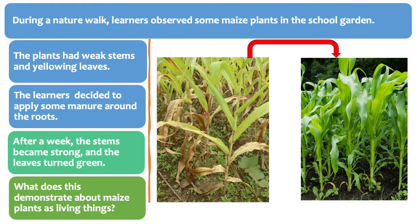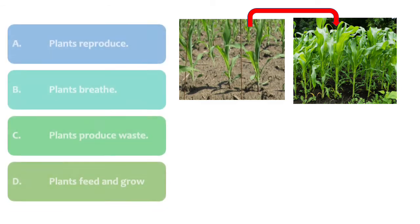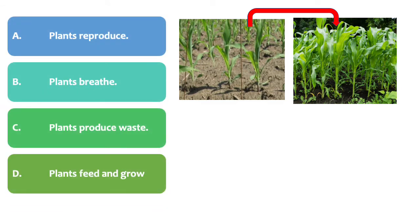What does this demonstrate about maize plants as living things? A. Plants reproduce. B. Plants breathe. C. Plants produce waste. And D. Plants feed and grow.